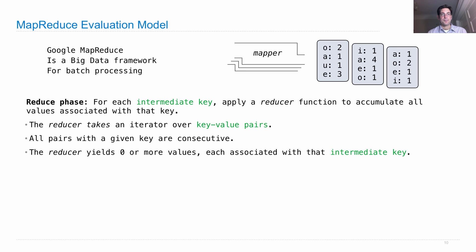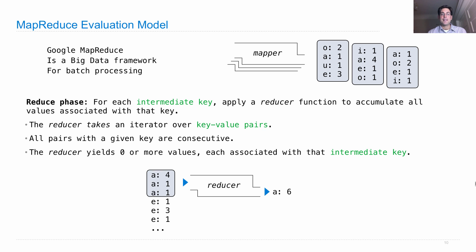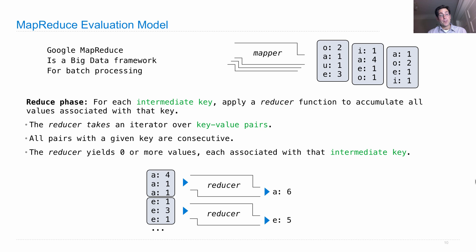Let's continue our example. The reducer sees a sequence of key-value pairs that are grouped by key already. It processes all of the different values with the same key to give us just one value. So we add together the counts and we get the total number of a's in the entire haiku is six. The same reducer or a separate reducer could process all the e's and tell us the total number is five. And there are two i's and five o's and one u in this haiku.